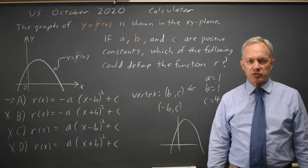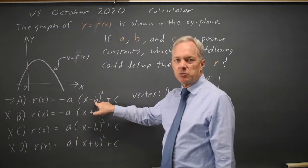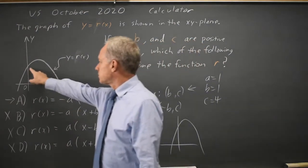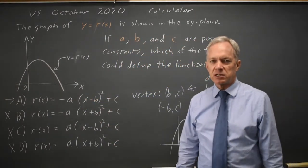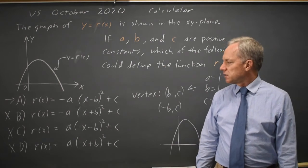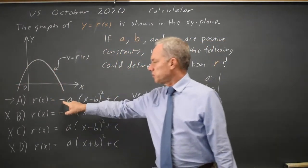You should know vertex form for a quadratic, and you should know that if you replace x with x minus b, you move to the right by b. Since this vertex moved to the right, choices a or c would be correct. And then, of course, since the leading coefficient should reflect that the parabola opens down, we need the negative.